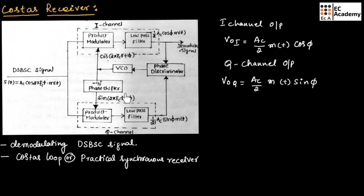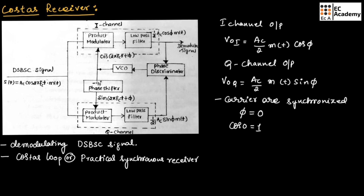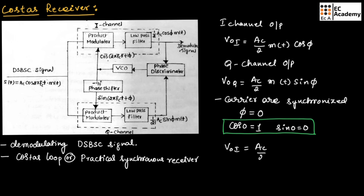At the receiver, if the local carriers are in phase with the carrier produced at the transmitter end, then the carriers are synchronized. When carriers are synchronized, the phase error φ equals 0. Since cos(0) = 1 and sin(0) = 0, the output of the I channel equals (Ac/2)·M(t) and the output of the Q channel equals 0, giving the desired demodulated signal M(t).